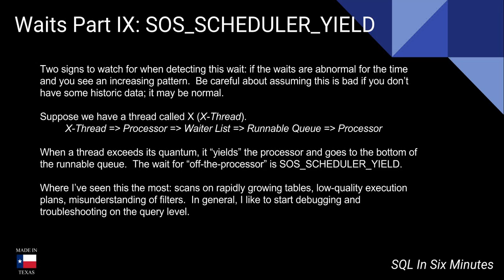I'll link to the Paul Randall article in the description — it's very good and covers a lot of different cases. Microsoft's documentation is admittedly vague on this one; all they say is it occurs when a task voluntarily yields the scheduler for other tasks to execute, and the task is waiting for its quantum to be renewed.